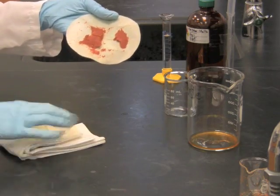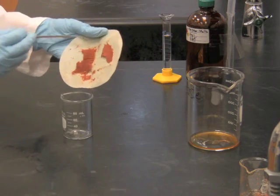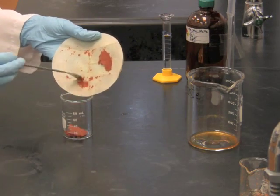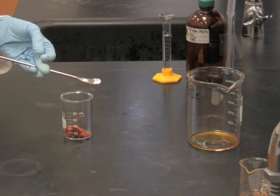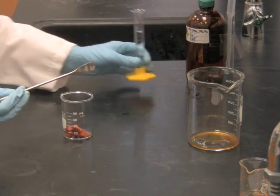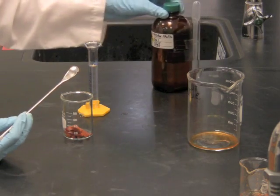Take the dehydrated tomato paste and transfer it into a small beaker and add 10 milliliters of a 1 to 1 mixture of petroleum ether and dichloromethane.